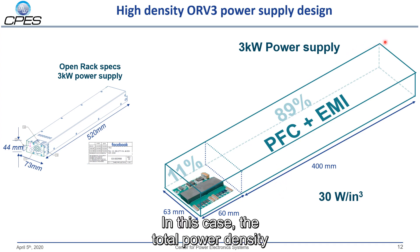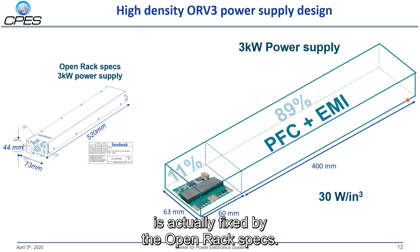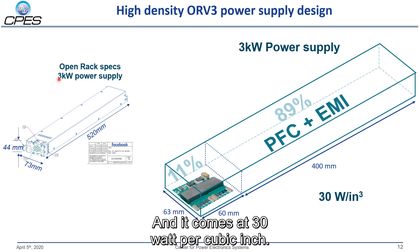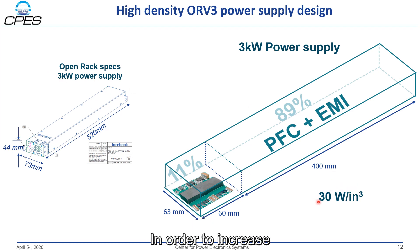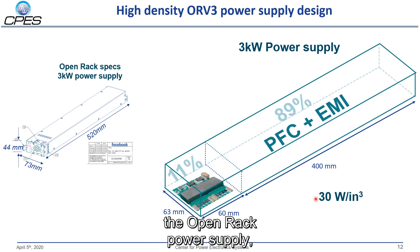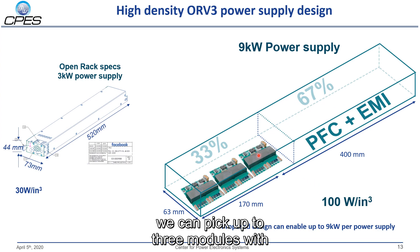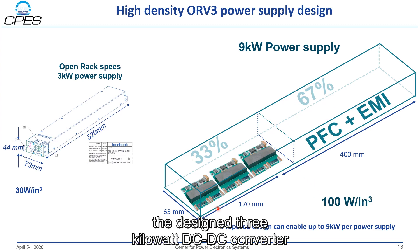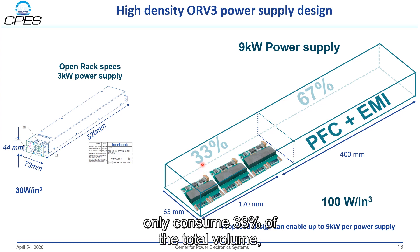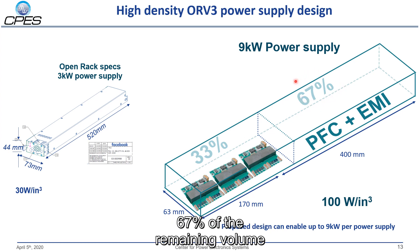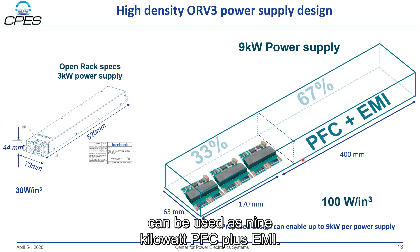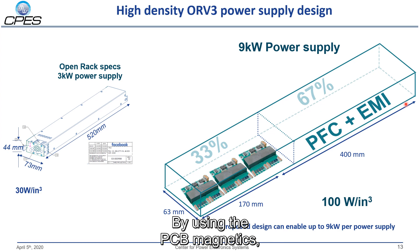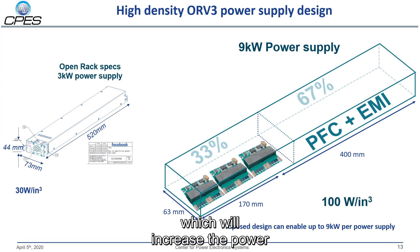The total power supply power density is fixed by the OpenRack specs at 30W per cubic inch. To increase the power density of the OpenRack power supply, we can fit up to 3 modules of the designed 3kW DC-DC converter in the power supply form factor, consuming only 33% of the total volume. The remaining 67% of the volume can be used as a 9kW PFC plus EMI stage. Using PCB magnetics with this proposed design, we can enable up to 9kW per power supply, increasing power density and the throughput of power consumed by the server rack.